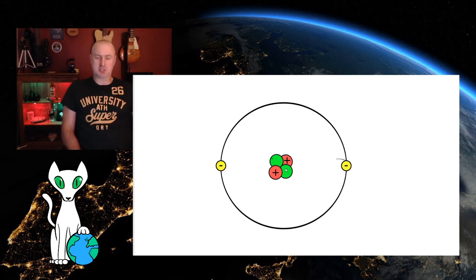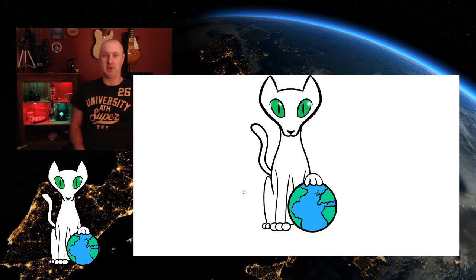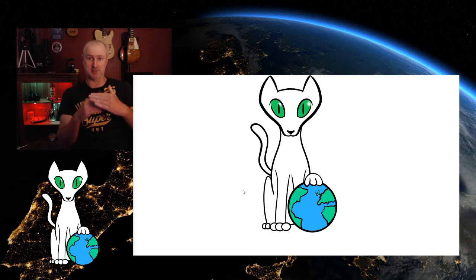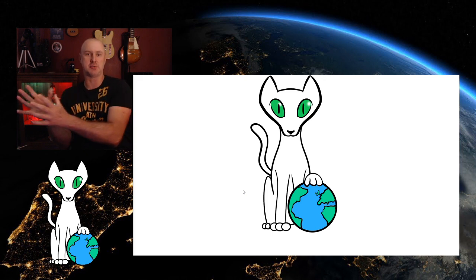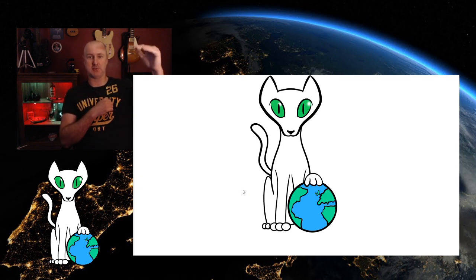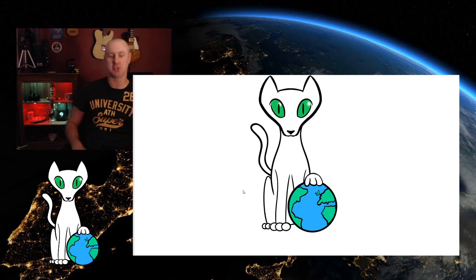Now this works with any element whatsoever. So just a quick recap that the atomic number is the bottom number and that tells us the number of protons and it will also tell us the number of electrons. The mass number is the biggest number and that will tell me the number of neutrons only if I take away the atomic number from it.